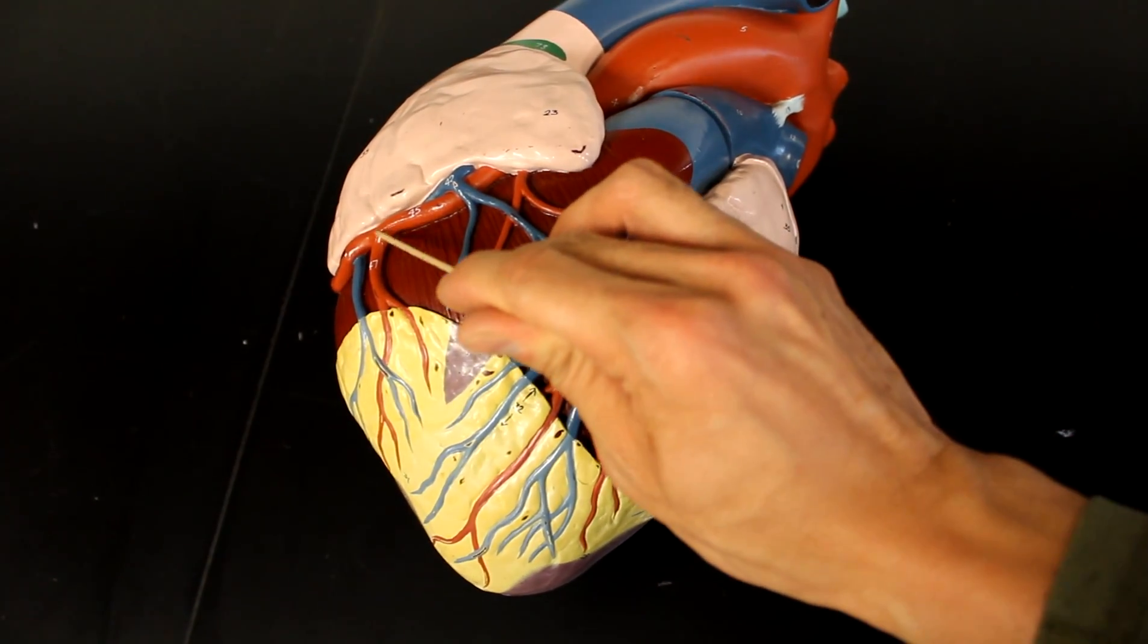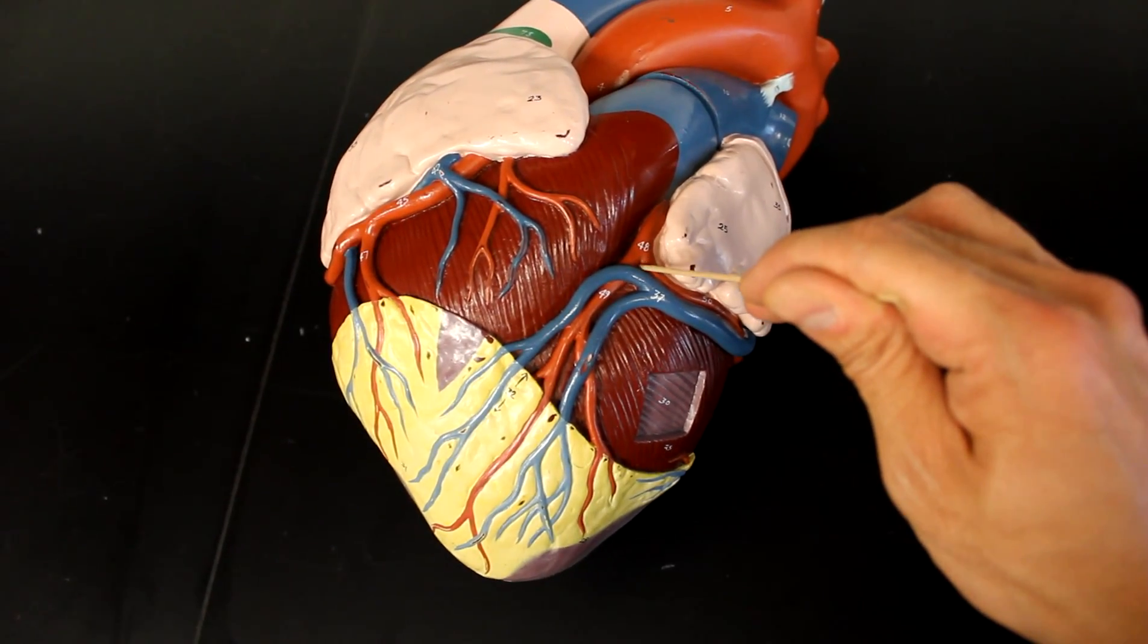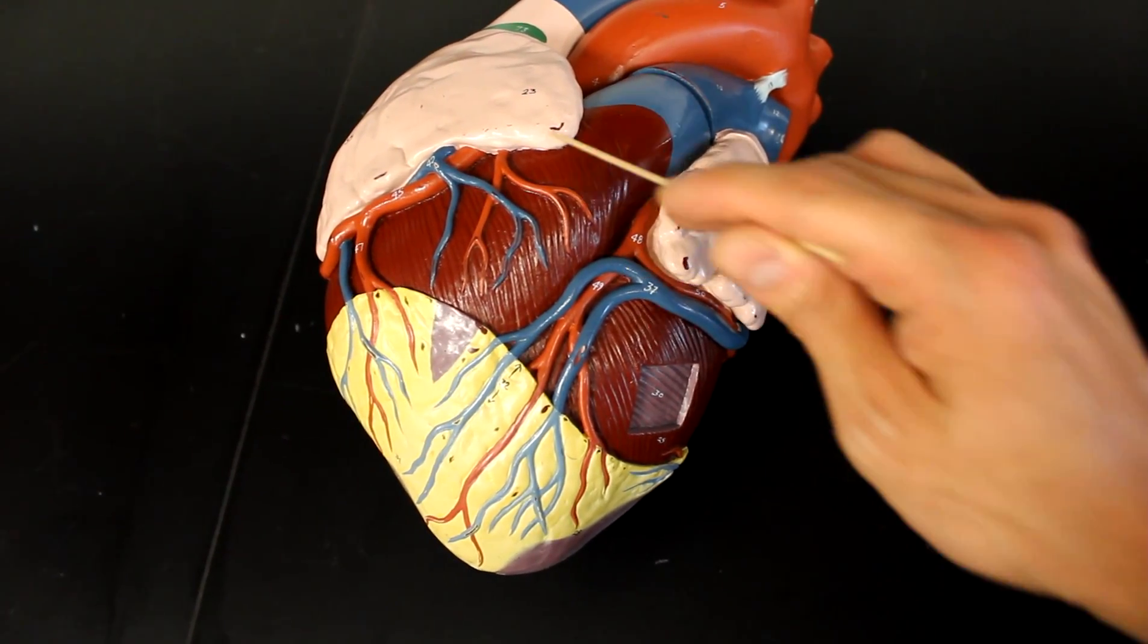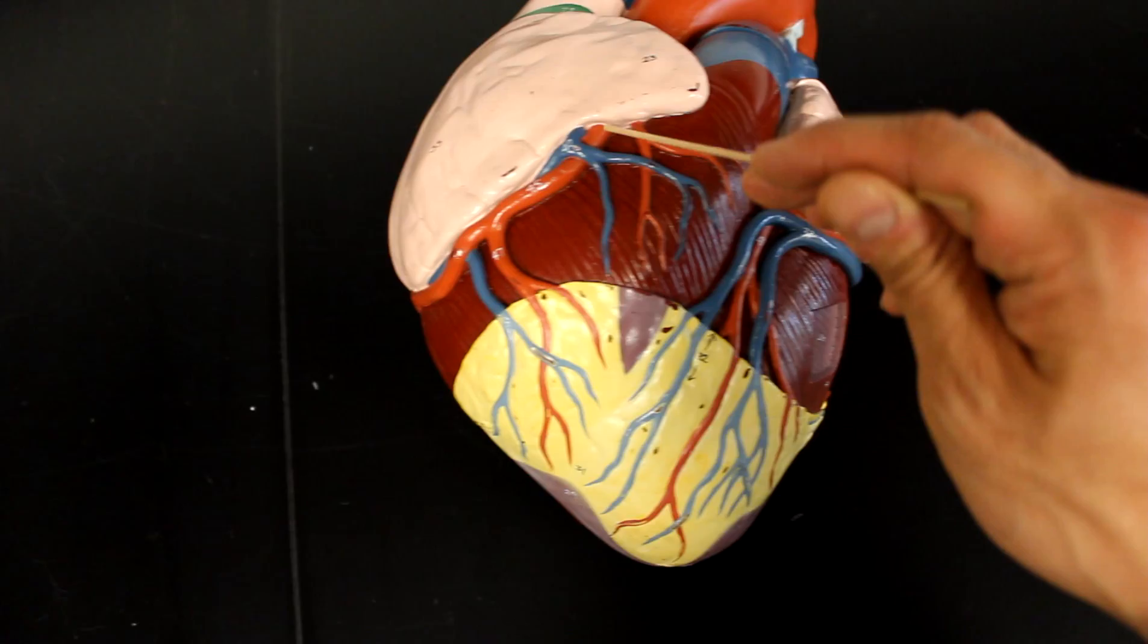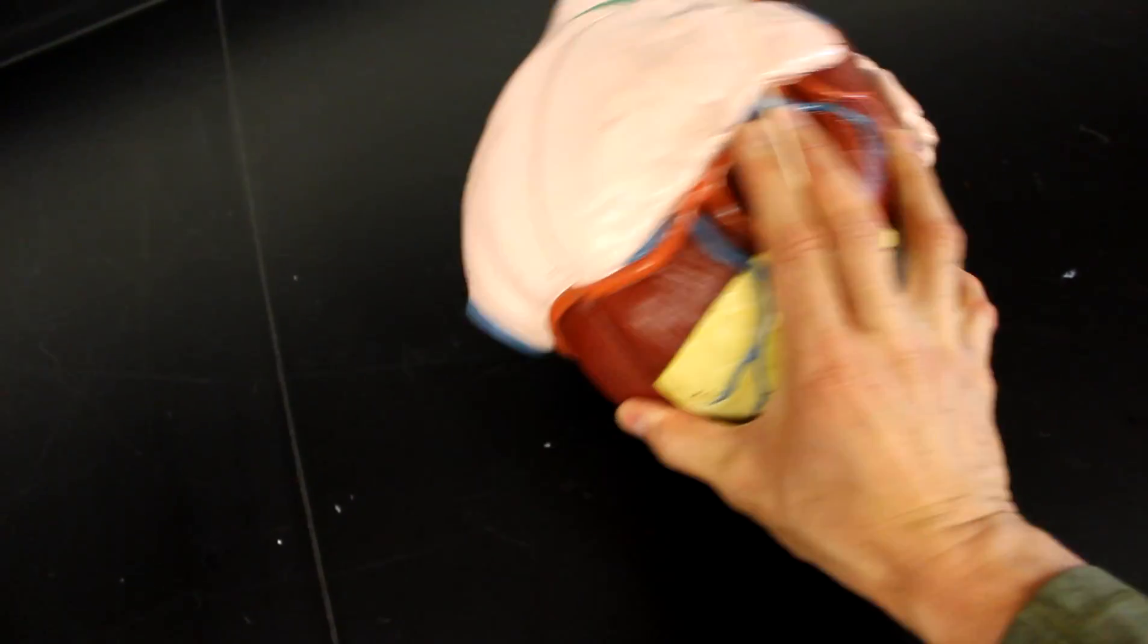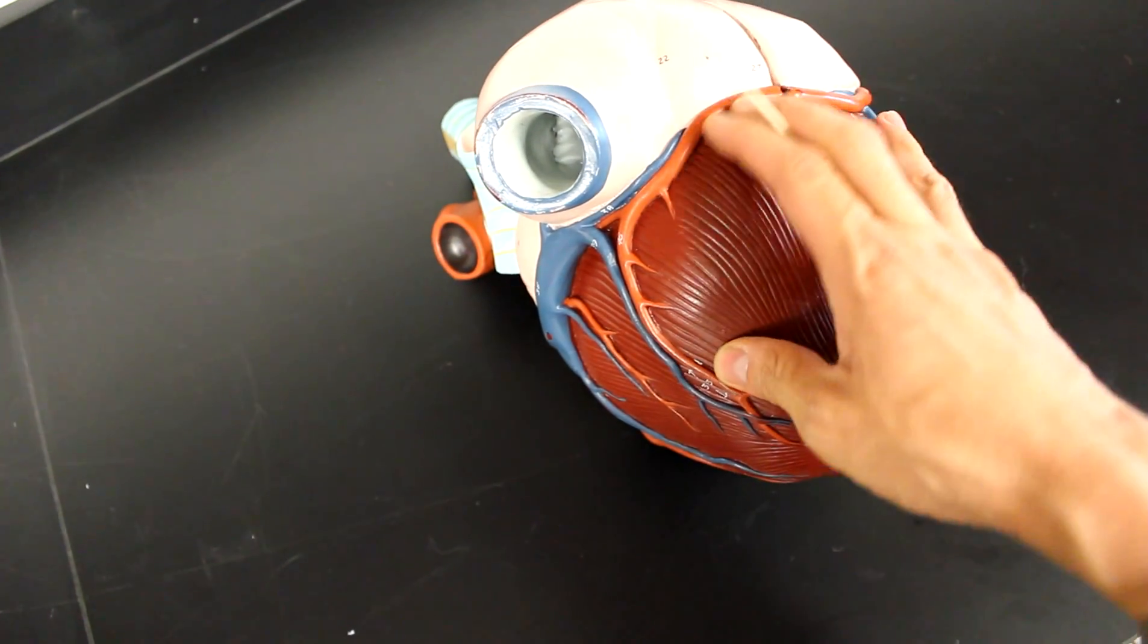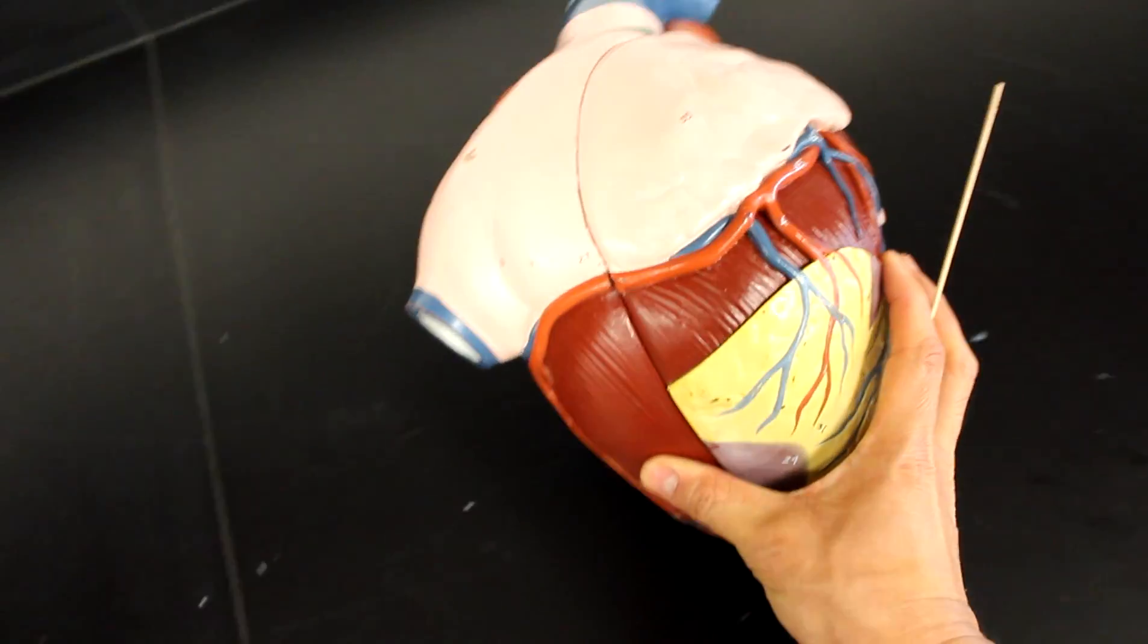Here's the right—it goes a long ways before it branches, while the left splits quite shortly into the other two. The right is very simple, just goes into what we call the marginal, and if I flip it, becomes the posterior interventricular branch. You can see this one coming across, and that's the posterior interventricular branch.